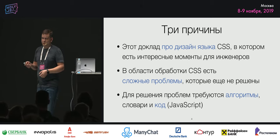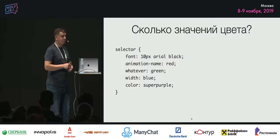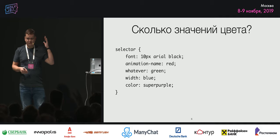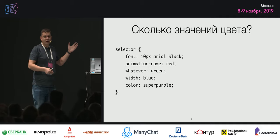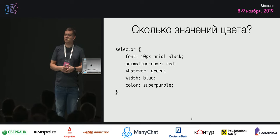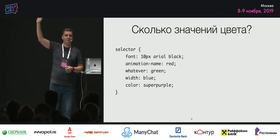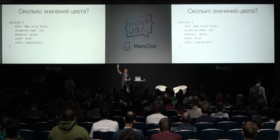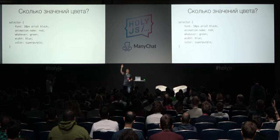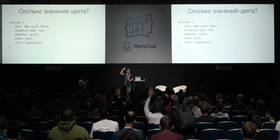Давайте сначала разомнёмся немножко — несколько каверзных вопросов. Маленький квиз. Вот есть CSS. Я думаю, что все читать умеют CSS, даже если его не пишут. И здесь есть какие-то значения цвета вроде бы. А сколько здесь правильных значений цвета, по вашему мнению? Давайте по убыванию. Кто видит пять? Один человек. Кто видит четыре? Больше. Три. Меньше. Два значения. Один. Одно. А ноль.